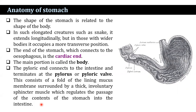The end of the stomach which connects to the esophagus is known as the cardiac end, and the main portion is called the body. The pyloric end connects to the intestine and terminates at the pylorus or pyloric valve. This consists of folds of the lining mucous membrane surrounded by a thin involuntary sphincter muscle, which regulates the passage of stomach contents into the intestine.